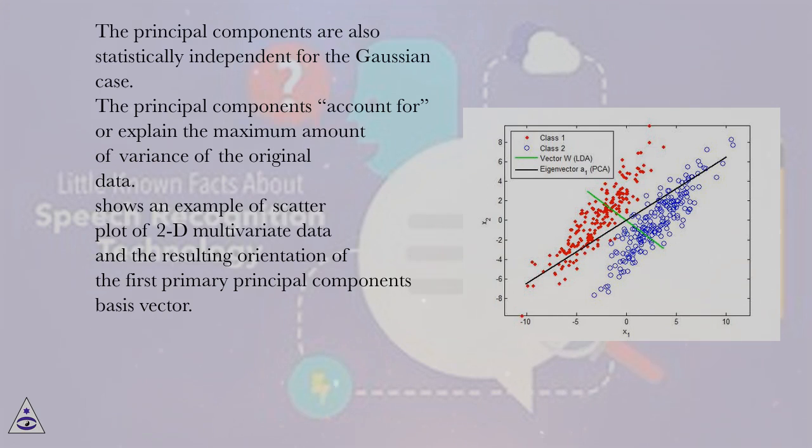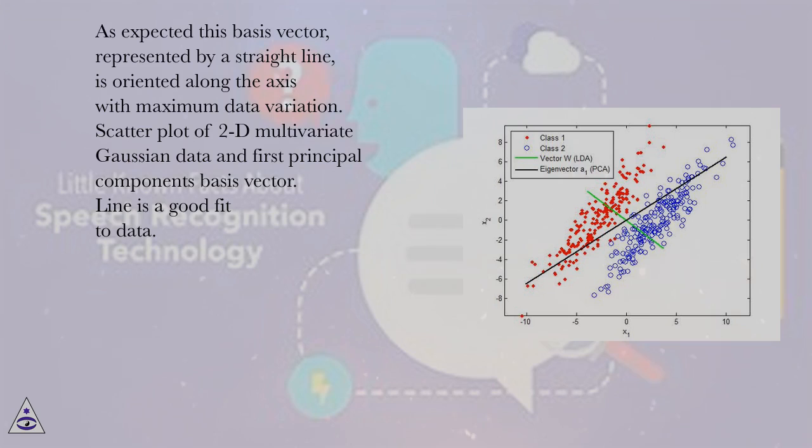Shows an example of scatterplot of 2D multivariate data and the resulting orientation of the first primary principal components basis vector. As expected, this basis vector, represented by a straight line, is oriented along the axis with maximum data variation.